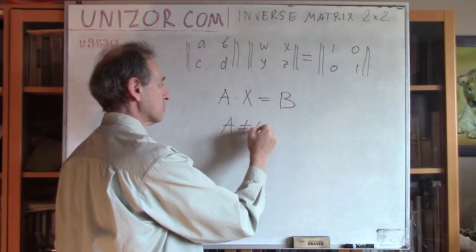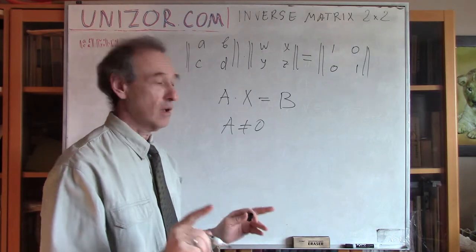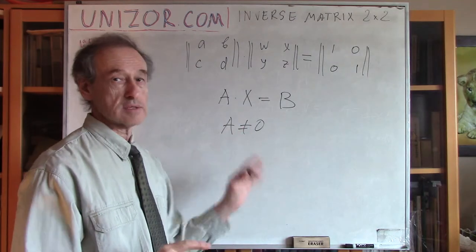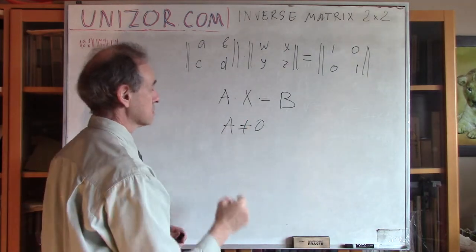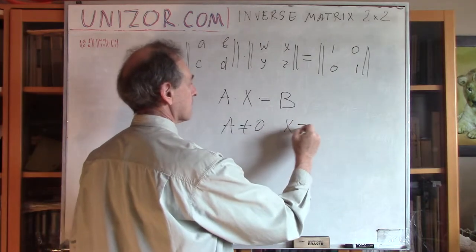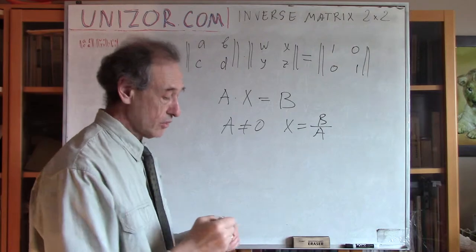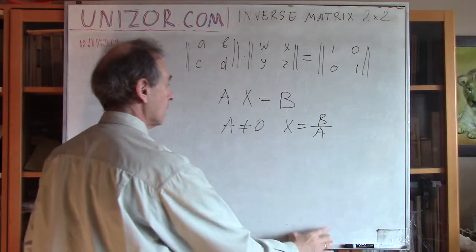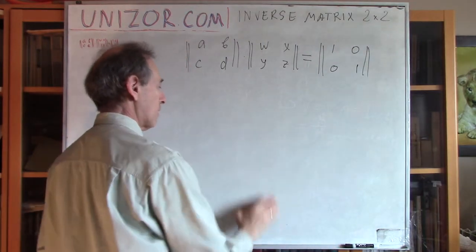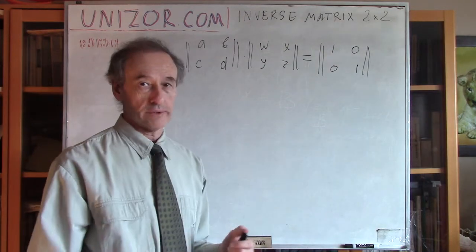Well, if these are not matrices, but numbers, let's say you have number a times number x equals number b. I know how to derive the solution to this. If a not equal to 0, this is a condition under which this actually does exist. The solution does exist. Then x is equal to b divided by a. Right? So, I know that. So, now I'm looking for something similar in the world of matrices.